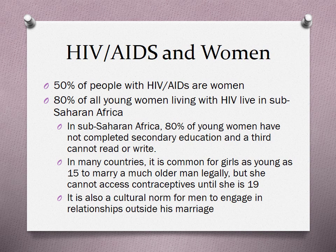Fifty percent of people with HIV or AIDS are women, which goes against the idea that all people with HIV and AIDS are gay men. Eighty percent of all young women living with HIV live in sub-Saharan Africa, which correlates to the fact that 80% of young women in sub-Saharan Africa have not completed secondary education, and a third cannot read or write. A lack of education results in people not understanding and not having access to information that allows them to protect themselves.